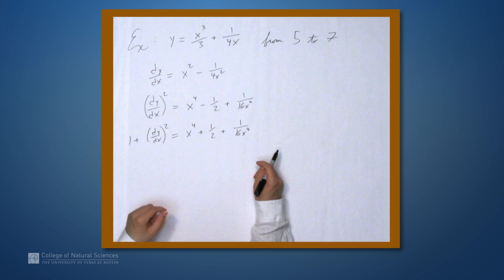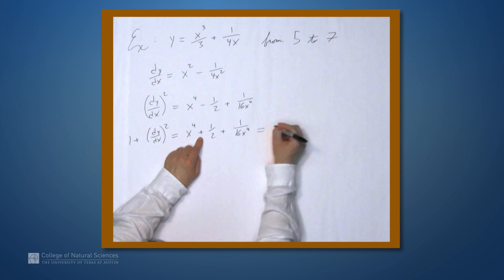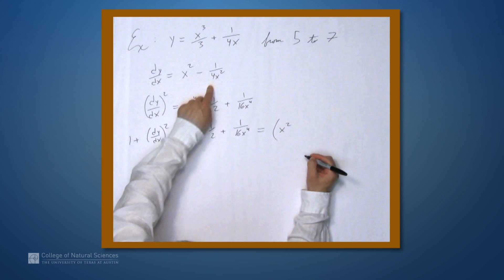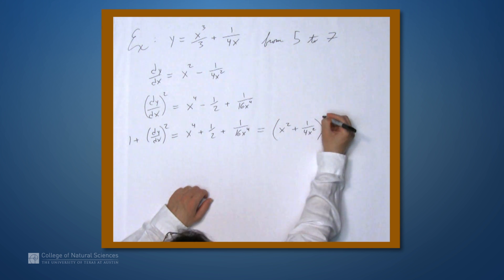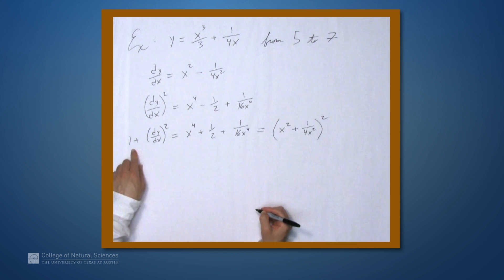If we change this minus to a plus, we can factor it not as x squared minus this, but as x squared plus 1 over 4x squared. So that's our expression under the square root in the integrand. It's just this quantity squared.